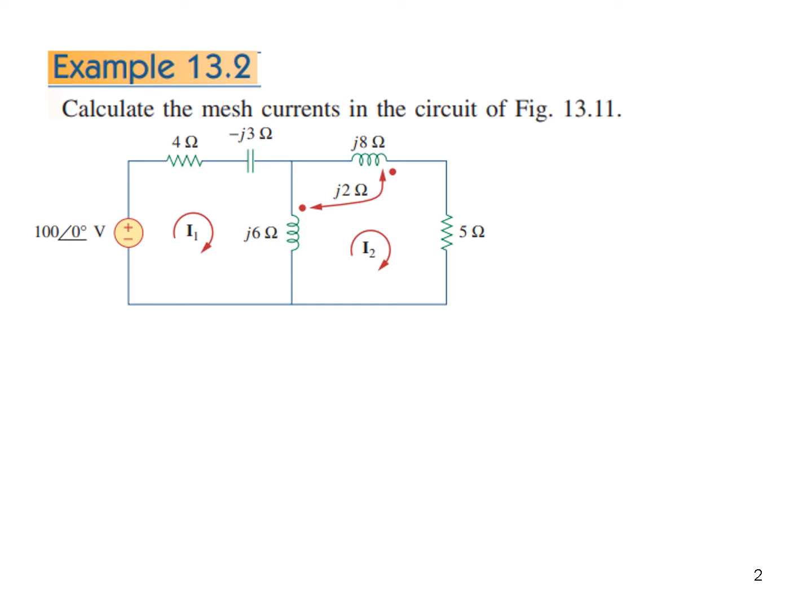So straight away on 13.2, calculate the mesh current in the circuit. Just to compare, you can see earlier we had done this type of circuit where this coil links or induces voltage in the second coil because of current I1 flowing through this. Similarly, the second coil induces voltage in the first coil because of the current I2.